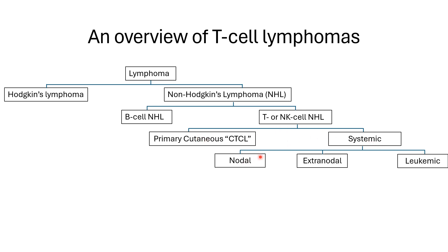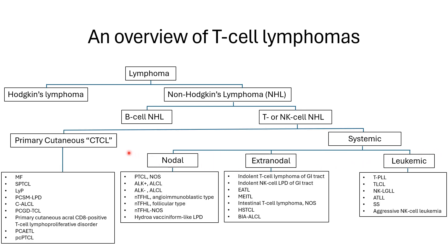In the systemic category, we have nodal — staying in the lymph node — or outside the lymph node (extranodal), or in the blood (leukemic). The primary cutaneous form includes cutaneous T cell lymphoma, such as mycosis fungoides and other entities. Today's topic is angio-immunoblastic T cell lymphoma, falling under the nodal component of the T and NK cell lymphoma.